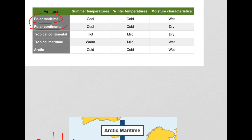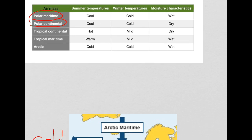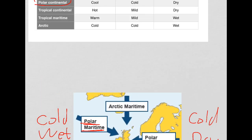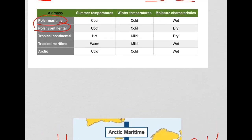The next air mass is polar continental. Polar again means cold and continental means dry. Looking at the table, summer temperatures will be cool, winter temperatures cold, and moisture characteristics dry.